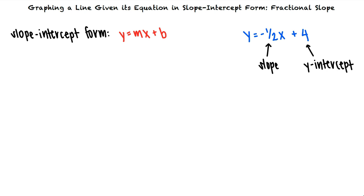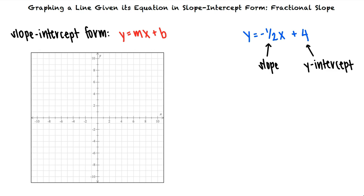To graph this line, we should recognize that the y-intercept of 4 means the point (0, 4) is on the line because this is the point at which the line crosses the y-axis.